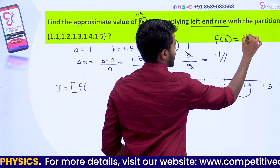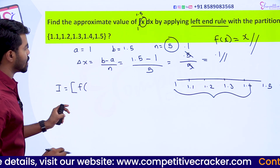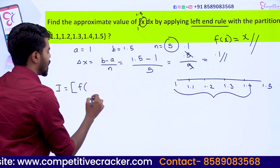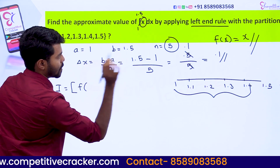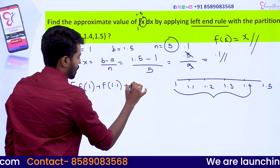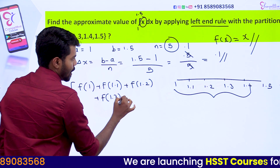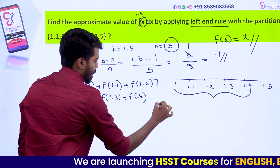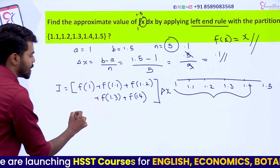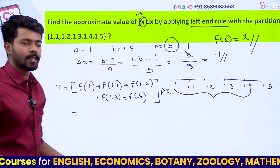Let's get started with the function of x. The function is f(x) = x. So the value of f of x is x. The sum is f of 1 plus f of 1.1 plus f of 1.2 plus f of 1.3 plus f of 1.4.